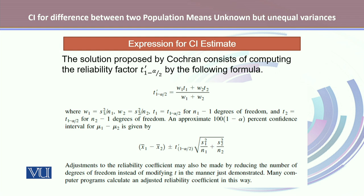t-prime 1 minus alpha over 2 is a weighted average where w1 is the weight s1-squared over n1, and w2 is the weight for sample 2 which is s2-squared over n2. t1 has n1 minus 1 degrees of freedom and t2 has n2 minus 1 degrees of freedom. The expression for the 100(1 minus alpha) percent confidence interval is given below. Adjustments to the reliability coefficient may also be made by reducing the number of degrees of freedom, and many computer programs calculate an adjusted reliability coefficient in this way.